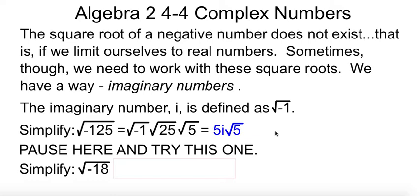Take a minute, try this one. The square root of negative 18. Well, again, if we break it down, that's negative 1 times 9 times 2. Square root of negative 1 is i, square root of 9 is 3. 3i square root of 2.